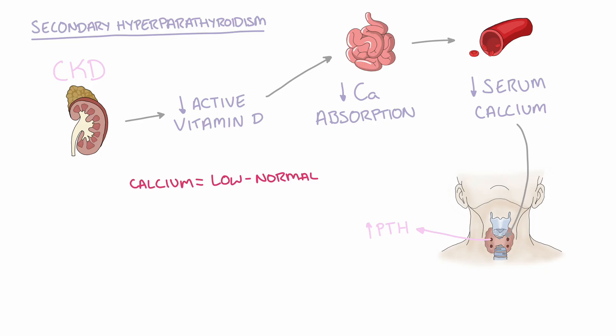As a result, secondary hyperparathyroidism is managed by correcting the vitamin D deficiency and, if necessary, beginning a course of cinacalcet. If patients are in end-stage renal failure — defined as a glomerular filtration rate of less than 15 — they will also require dialysis.